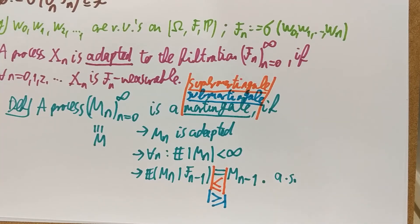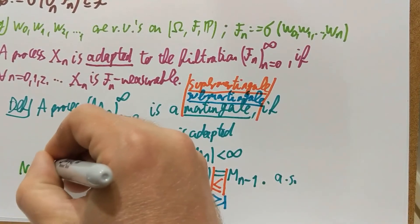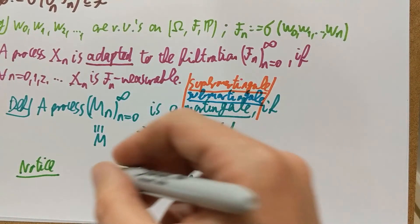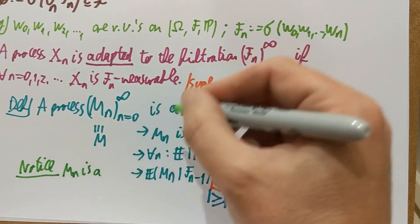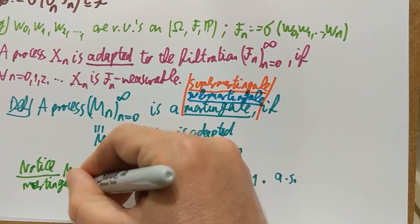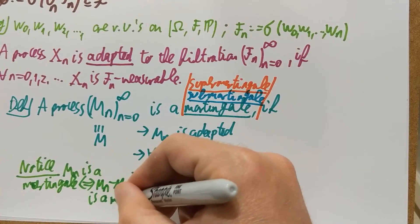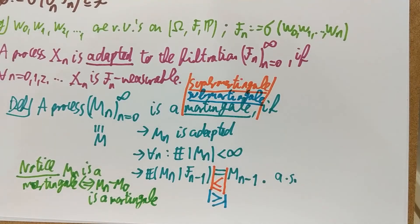One remark before I proceed: notice a simple fact — M_n is a martingale exactly when M_n − M_0 is a martingale. The same holds for sub-martingales and super-martingales. So in fact, I can always subtract the initial value M_0 and that will not change the martingale property, or the sub-martingale or super-martingale property.